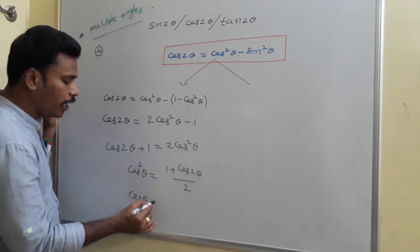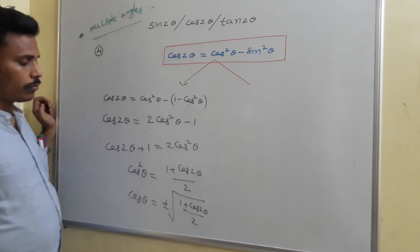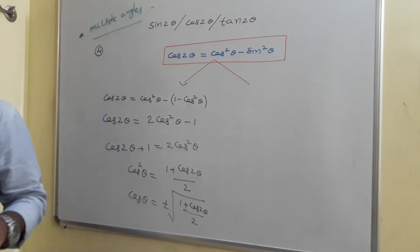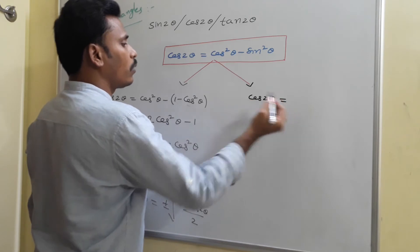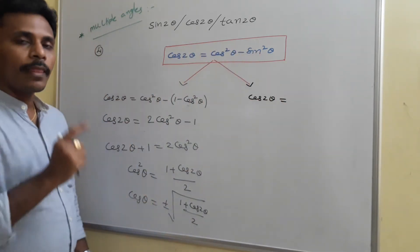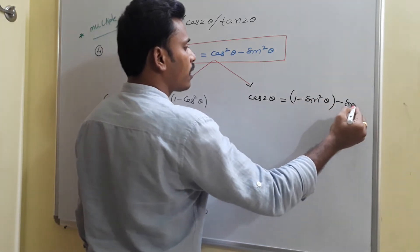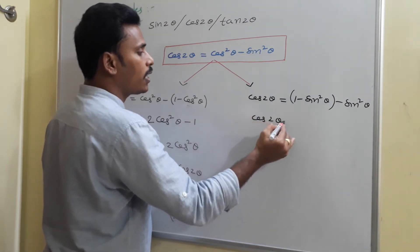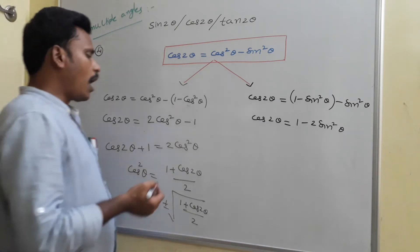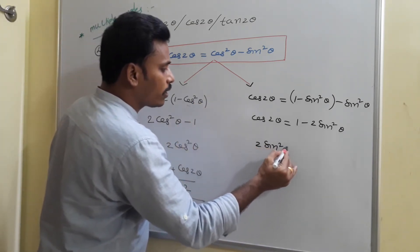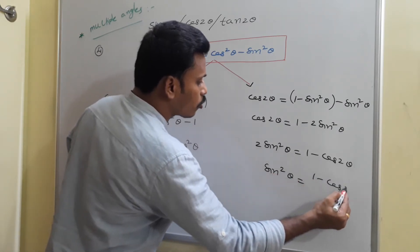If you need cos theta, we take the square root, giving cos theta equals plus or minus the square root of (1 plus cos 2 theta) divided by 2. In a similar way, to convert everything in terms of sine: starting from cos 2 theta equals cos squared theta minus sine squared theta, rewrite cos squared theta as 1 minus sine squared theta. This gives cos 2 theta equals 1 minus sine squared theta minus sine squared theta, which simplifies to 1 minus 2 sine squared theta.